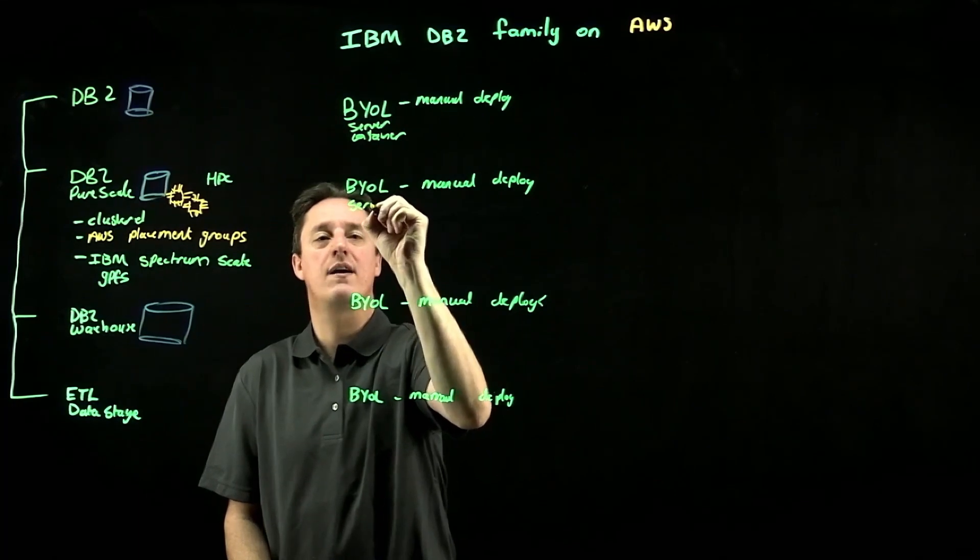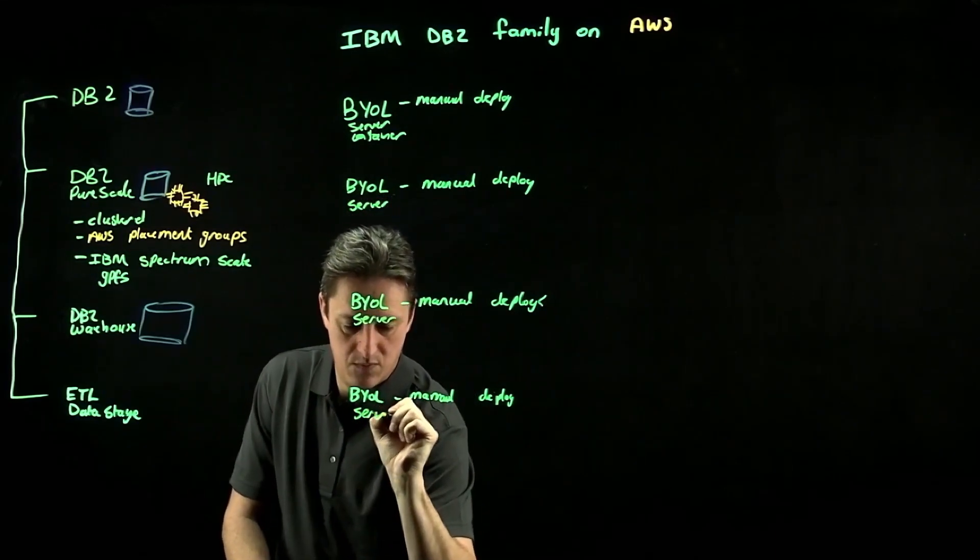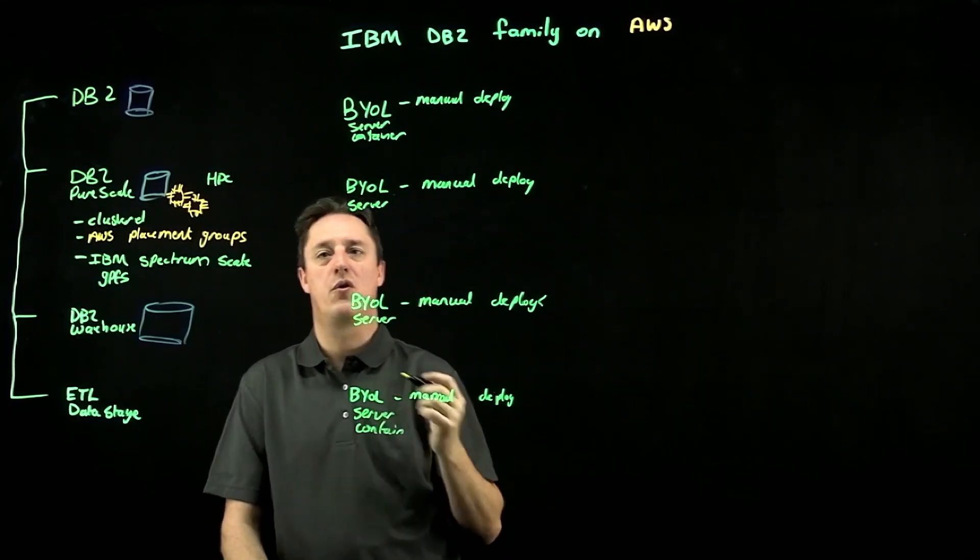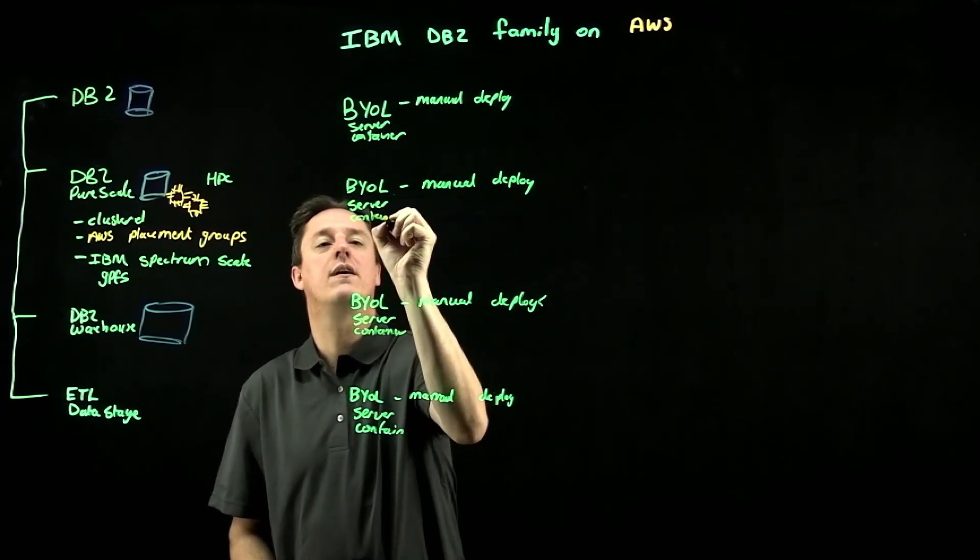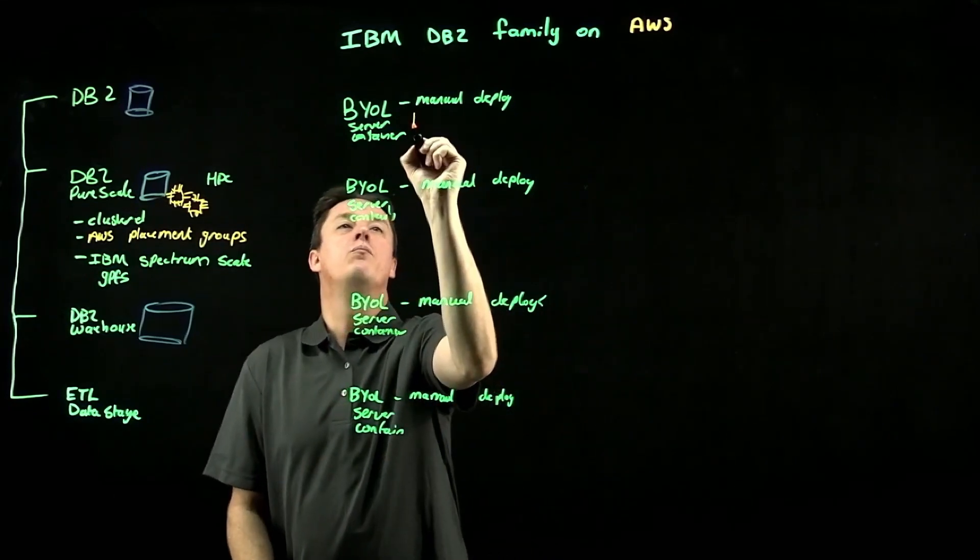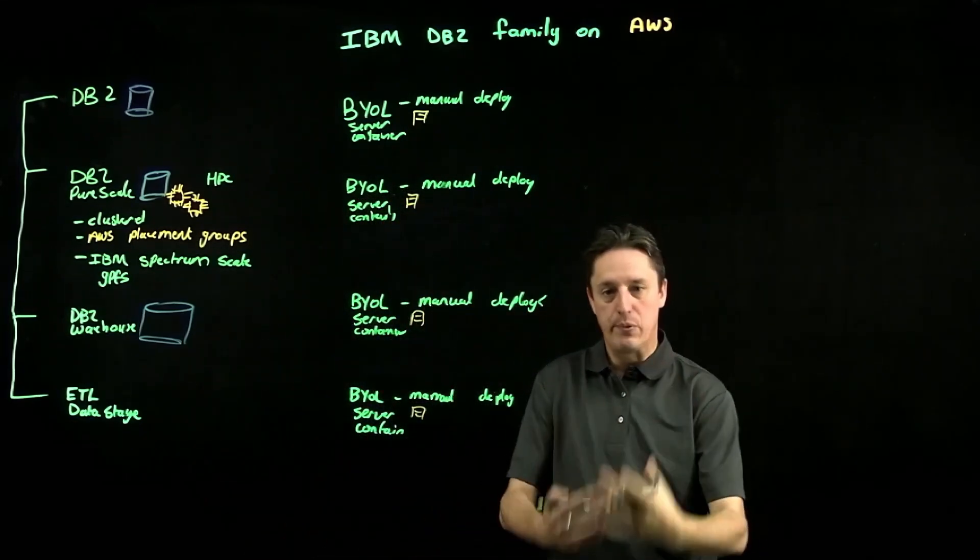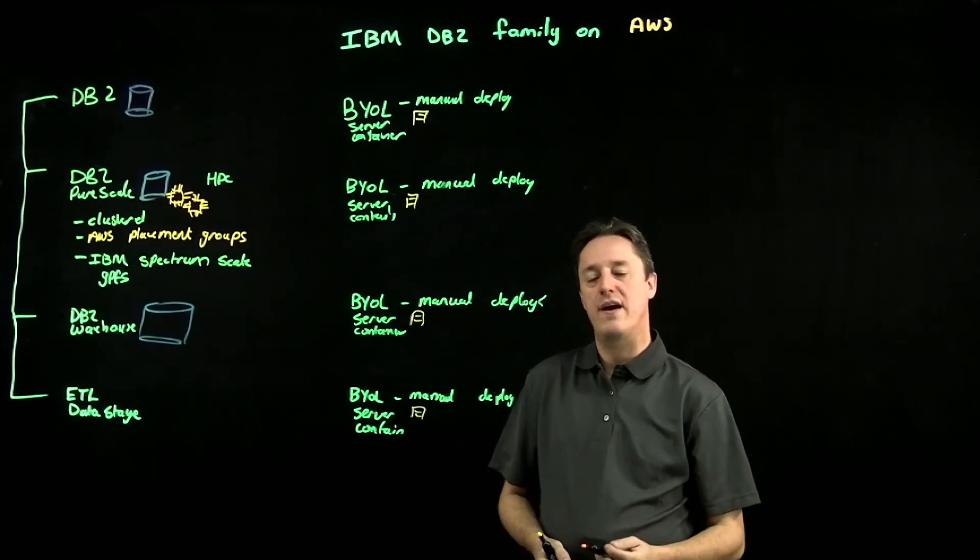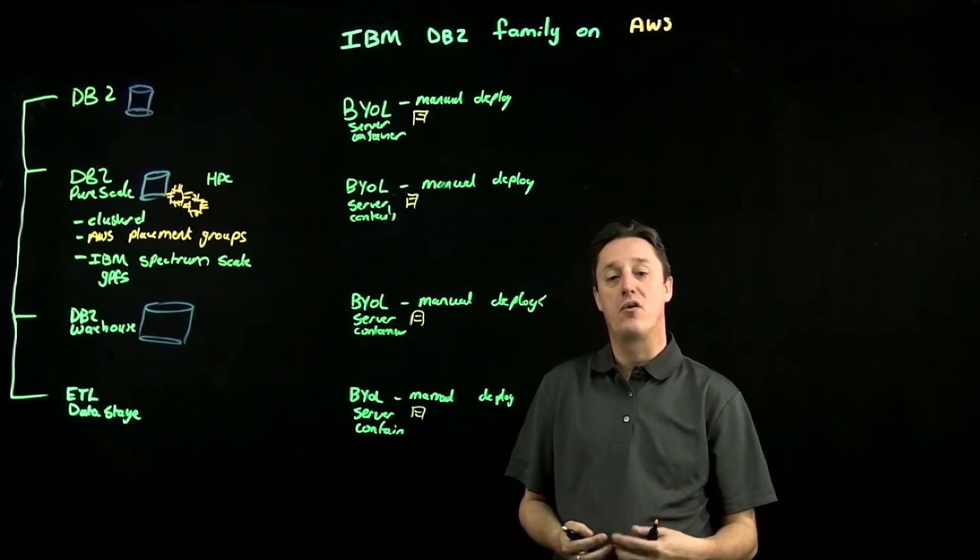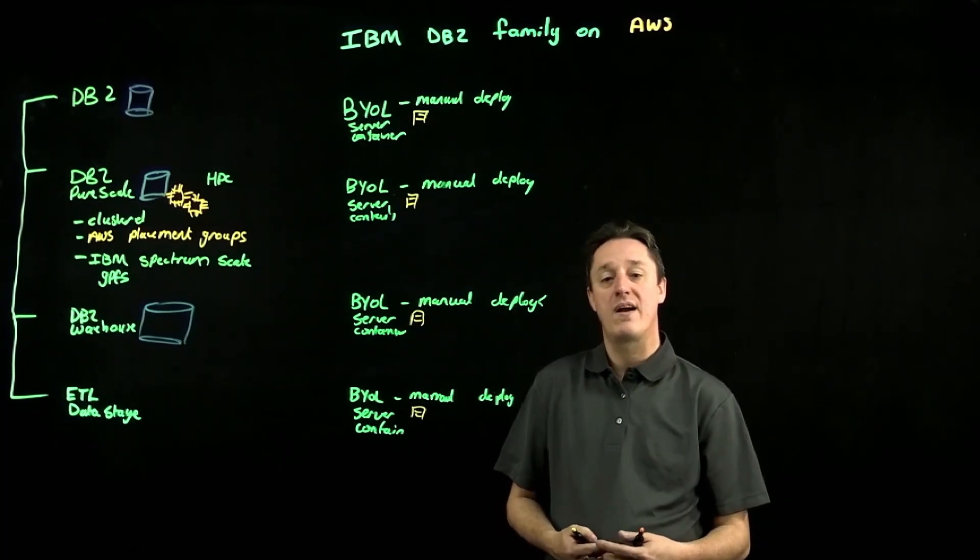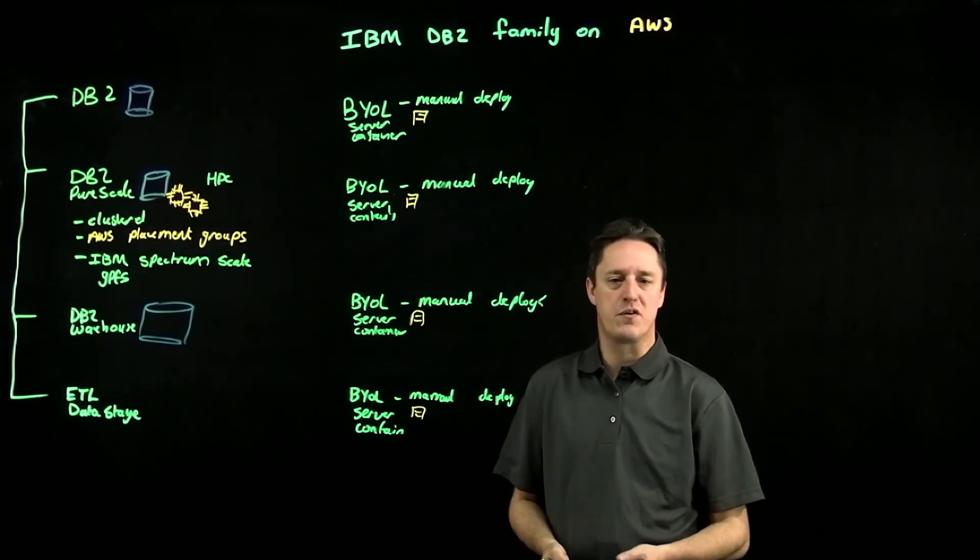So likewise, PureScale has a server-based option, we've got a container workload option. So server-based model is literally a direct transfer—I'm going to take my licensing as it is on my physical server on-premises, deploy it on top of an EC2 instance, and then continue to use that. If it is a container-based licensing model that I'm using on-premises, I can bring that across to AWS and run that on top of Red Hat OpenShift on AWS. And in some cases, I can even take that containerized licensed model and bring it across to managed OpenShift, something like a Red Hat OpenShift Service on AWS, or ROSA.